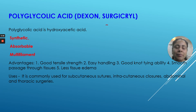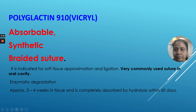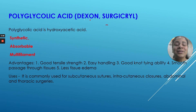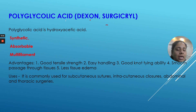Let's jump to the next section: absorbable suture materials. Absorbable suture materials are very important to use in the oral cavity, and these days we mostly prefer using absorbable suture materials. The first in that category is polyglycolic acid.